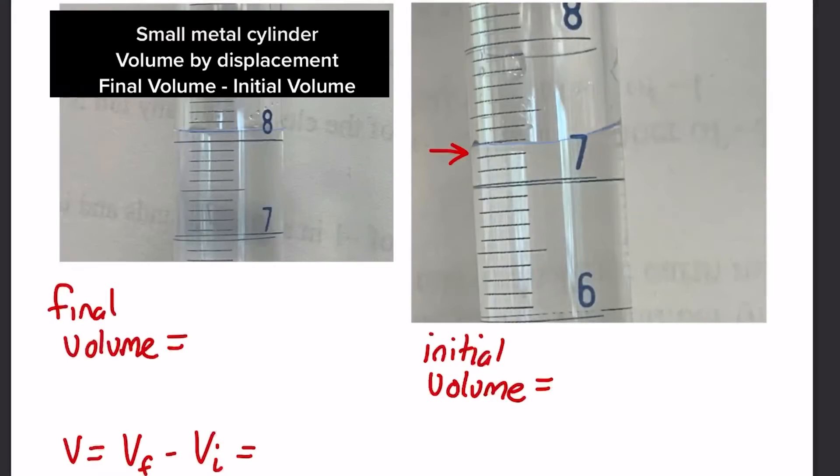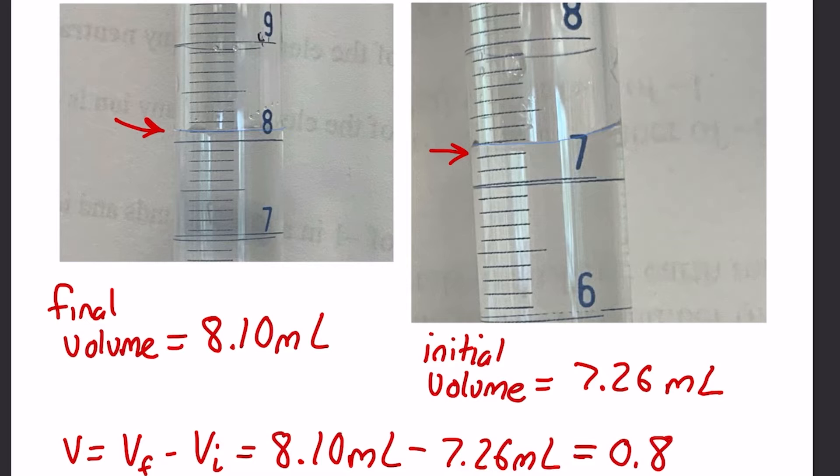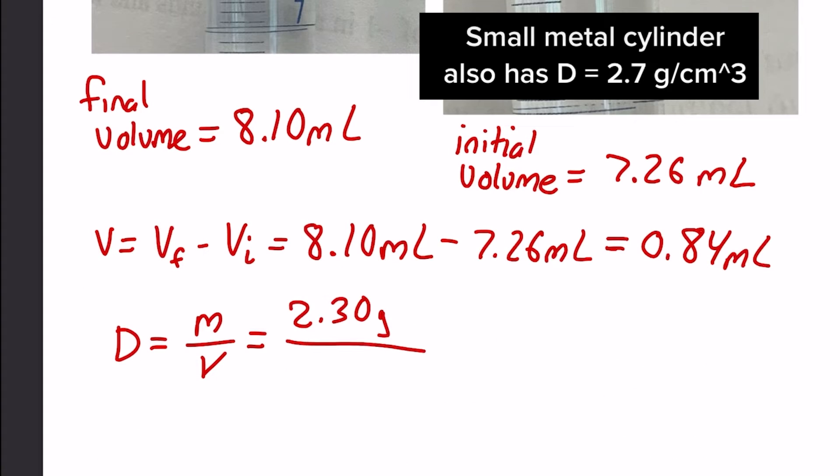I'm doing volume by displacement, so I'm going to take the final volume, subtract it by the initial volume, and I get a volume of 0.84 milliliters. Density, look, it matches 2.7.